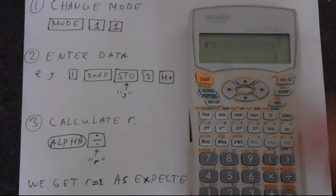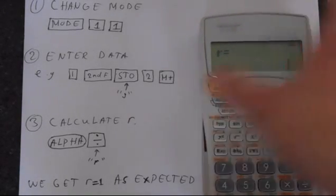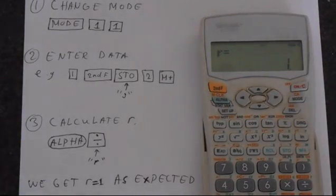and just press equals, and it calculates it. And we get R equals 1, just as we expected. So that's how you calculate Pearson's R using your calculator. Thank you for watching.